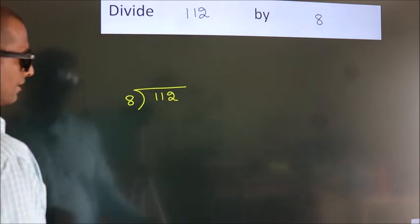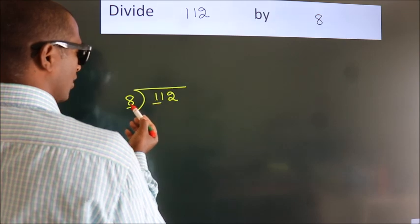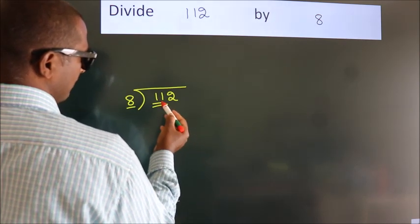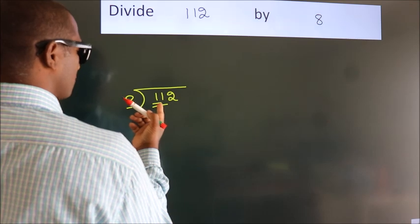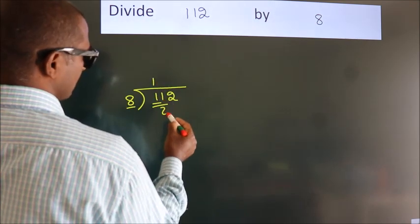Next, here we have 1, here 8. 1 is smaller than 8, so we should take 2 numbers: 11. A number close to 11 in the 8 table is 8 once, 8.